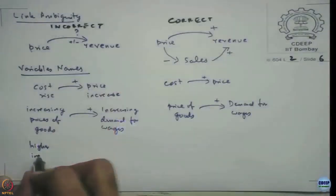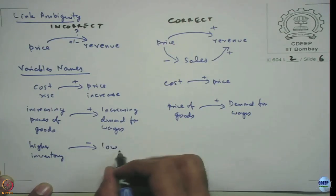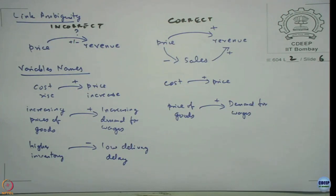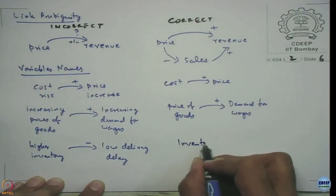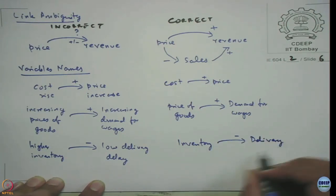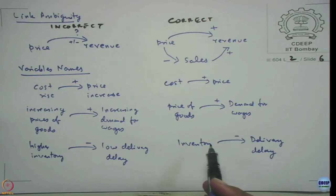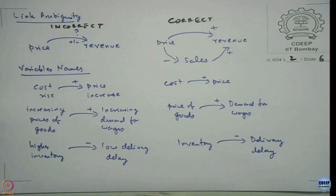Here is a simple negative link example. Higher inventory results in low delivery delay. If you are well stocked and have a lot of inventory, you can deliver a product in a very short time — that is what people want. But to capture it correctly, we say 'inventory decreases delivery delay.' When we read it: as inventory increases, expect delivery delay to come down, because you have ready stock available to meet future demand. This is the correct way to write it. The right side shows the correct ways — using higher or lower language is not correct. Allow the action to be described by the links.